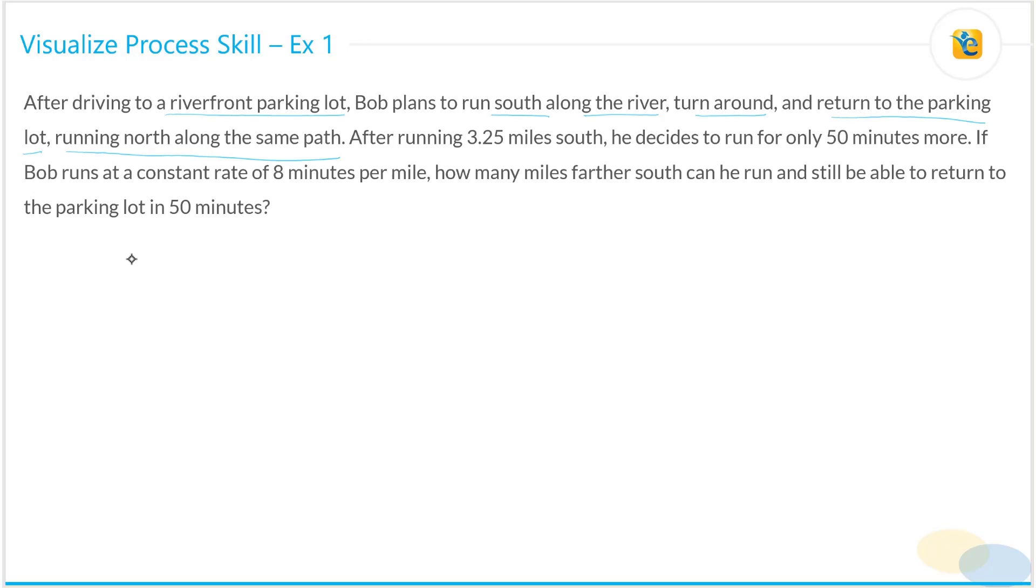So what's happening is he's there at this parking lot. This is the parking lot PL. He runs south along the river. This is south direction and then he turns back. He goes back up north and he goes back to this parking lot along the same path. So if you think about it, this is a starting point. This is where he turns around and he goes back to the parking lot.